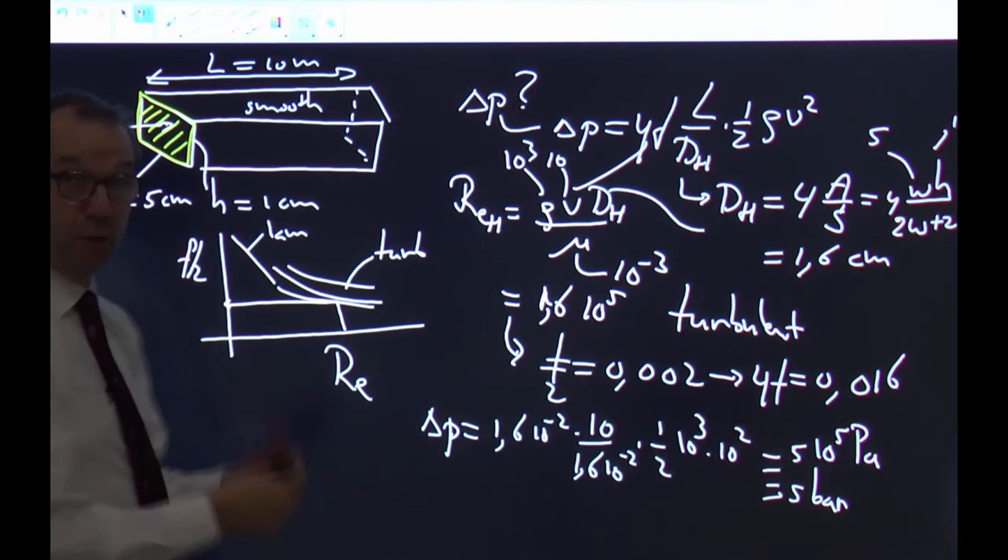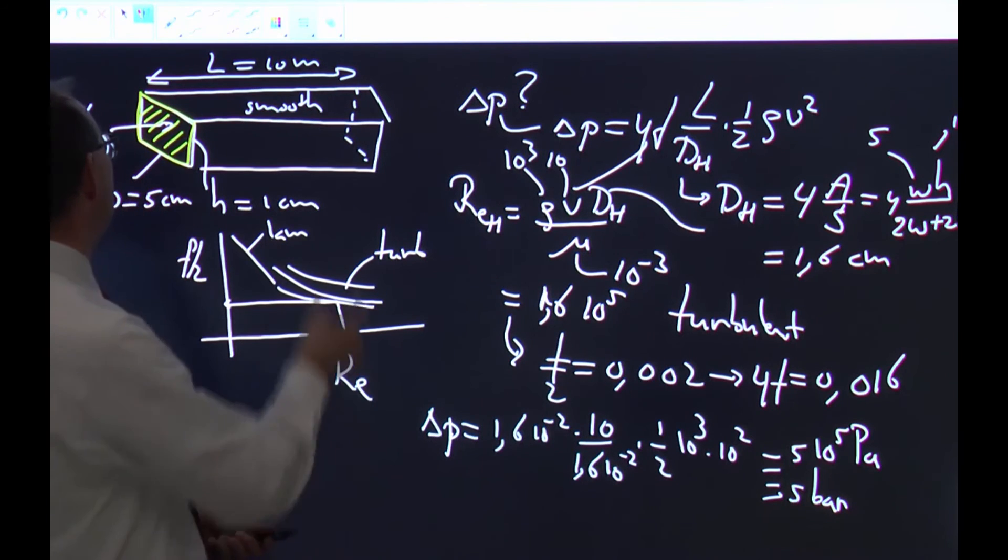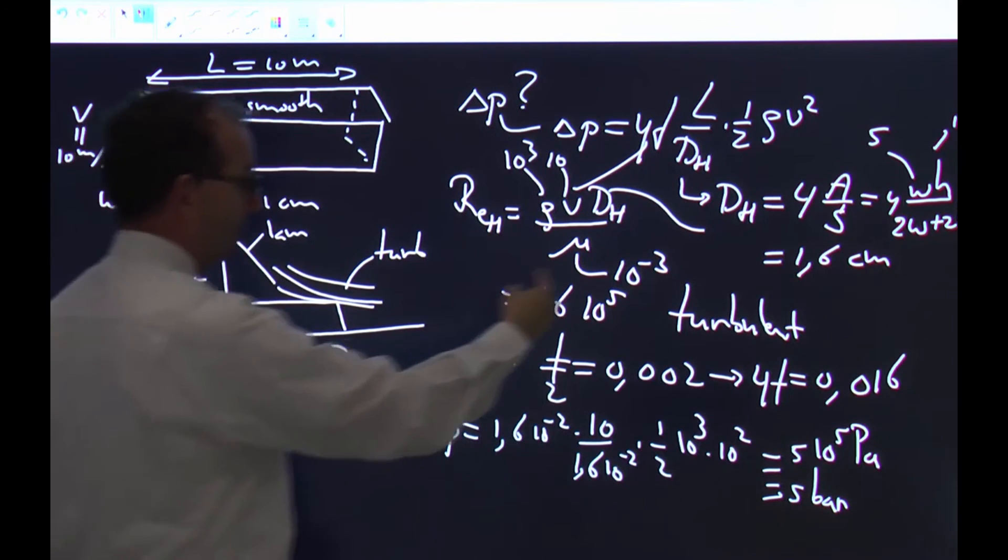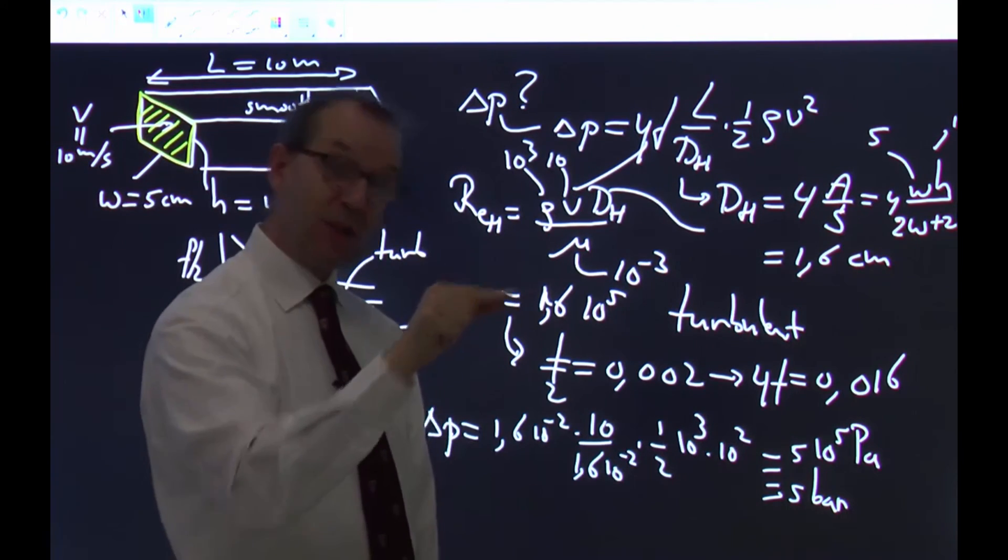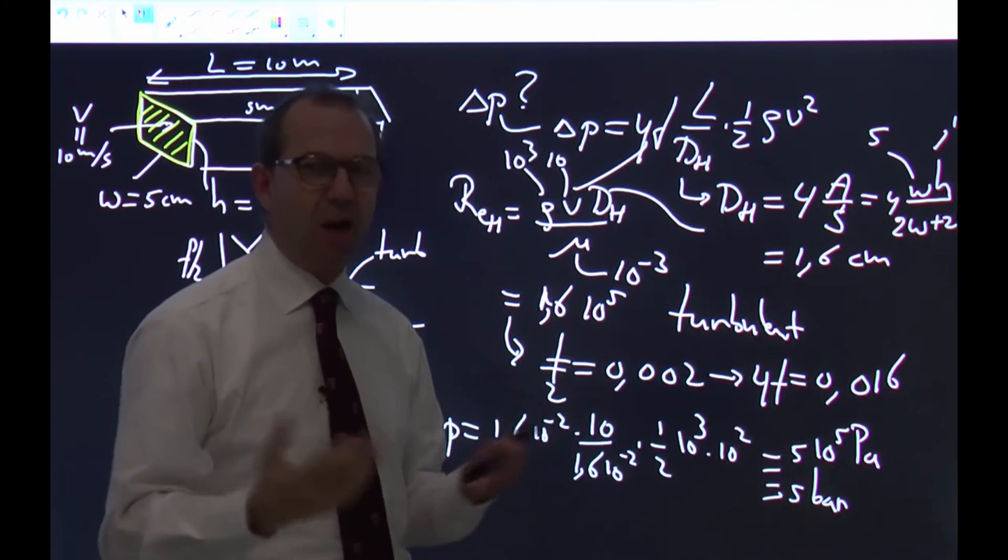So there's quite a pressure drop over the 10 meter, and that is due to that actually the duct is narrow, as if it's a tube of 1.6 centimeters, less than an inch, and I flow at 10 meters a second through it, which is pretty high velocity.